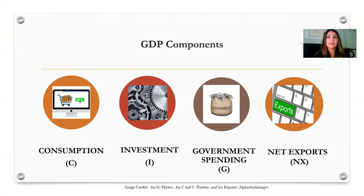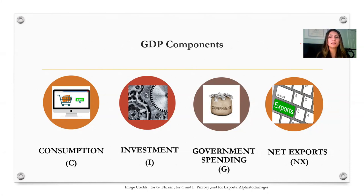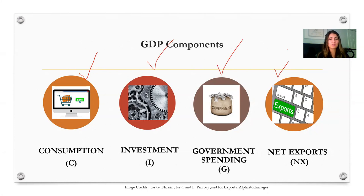There are different ways to calculate the GDP of a country. In this presentation, I will be focusing on the expenditure approach. In this approach, GDP is calculated by adding consumer spending, investment spending, government spending, and net exports. Consumer spending refers to households and their purchases on goods and services, such as food, clothing, doctor visits, and cell phones.